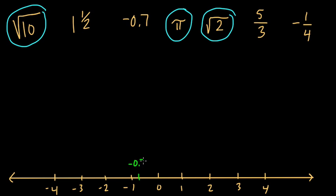So negative 0.7 should be about here, and that's the first one we'll mark. Put a dot there, that one's done. Next, let's start with another simple one: negative 1/4. That's negative one fourth, or right down here, negative 0.25. So that'll be about here, negative 0.25. This one's done.